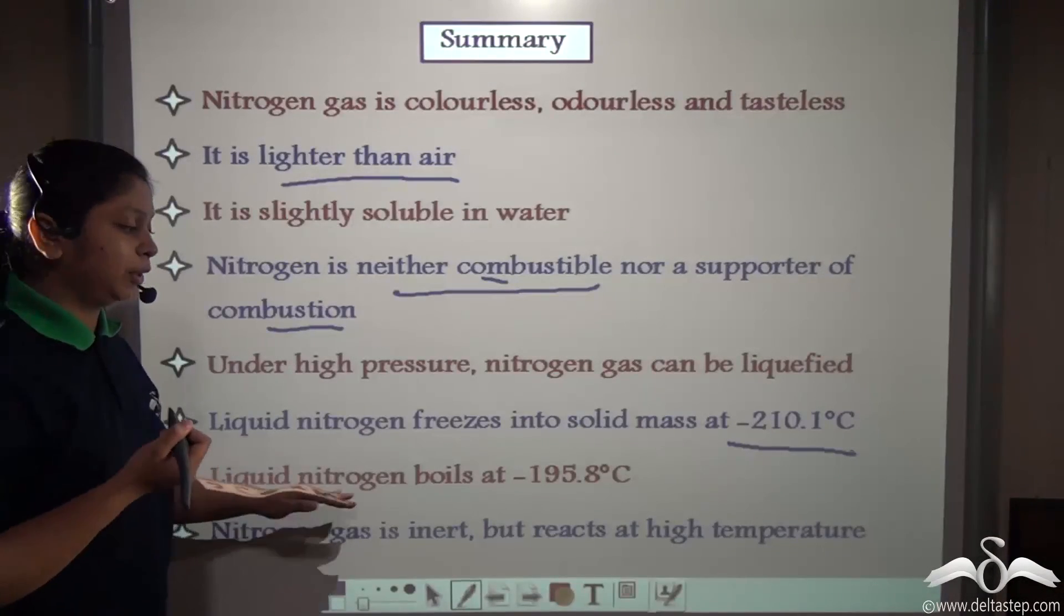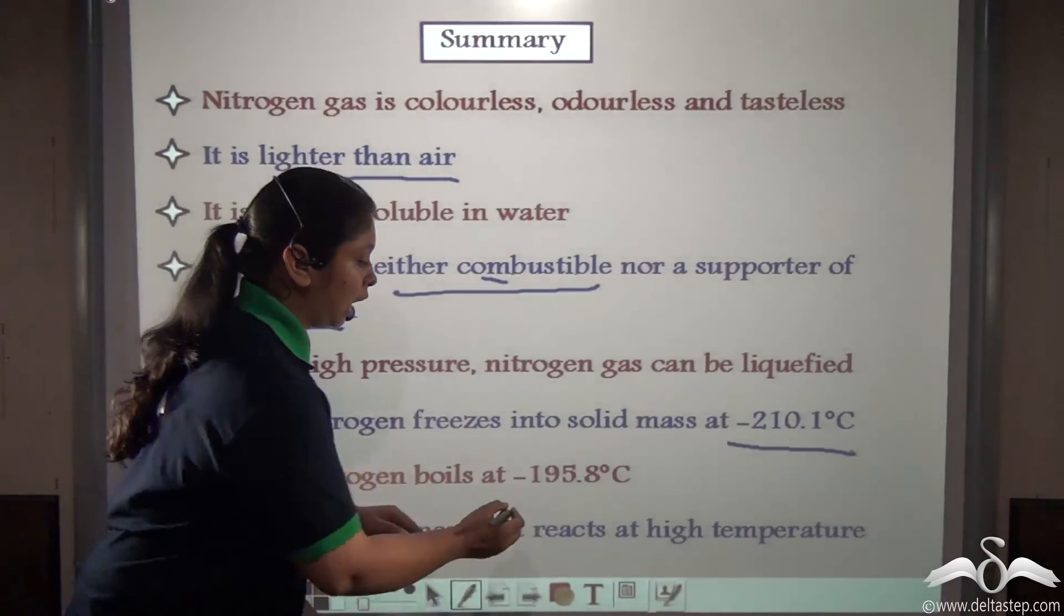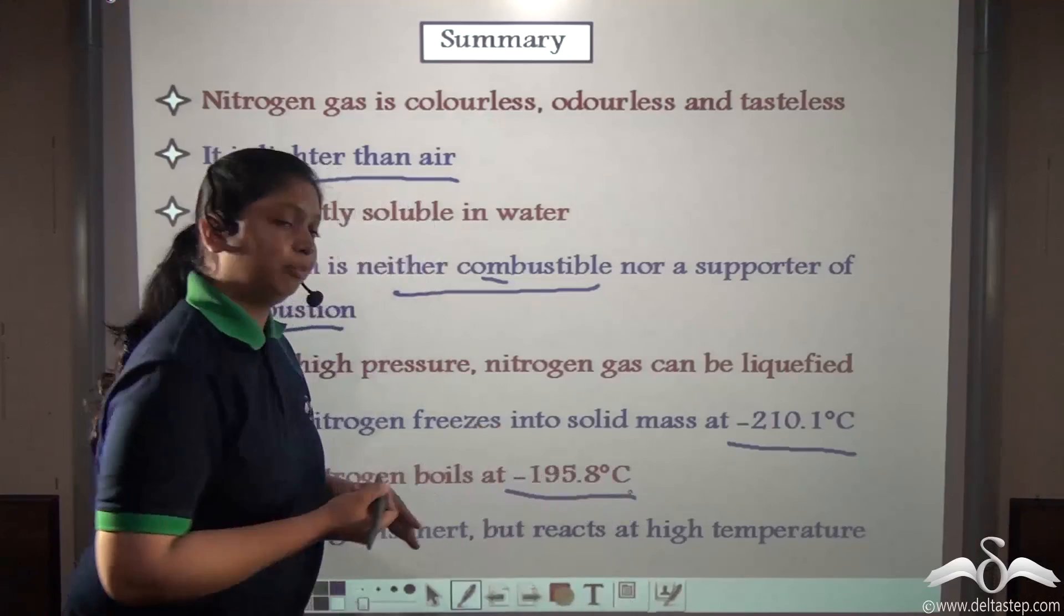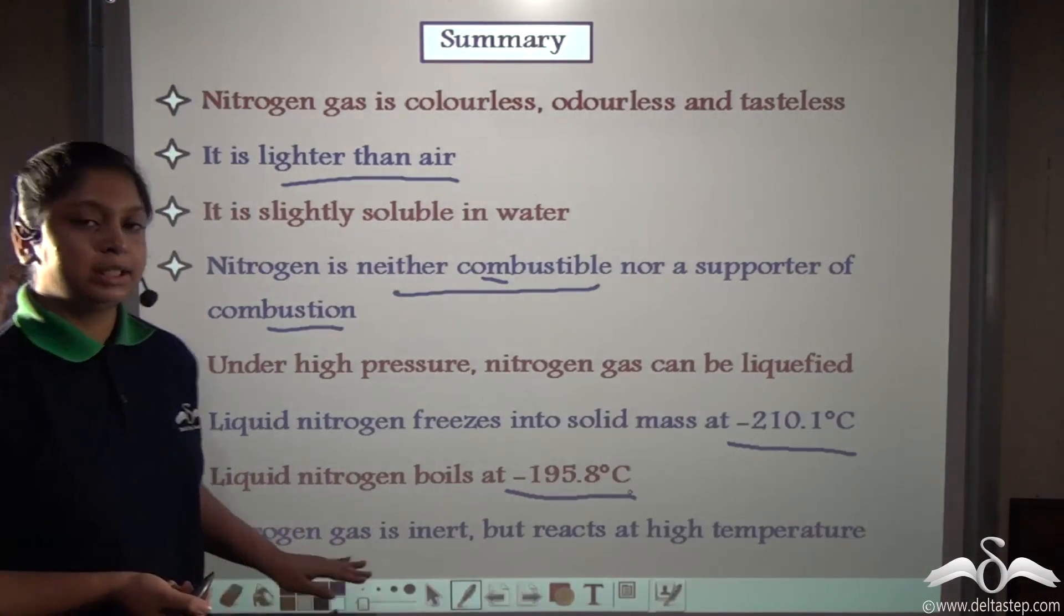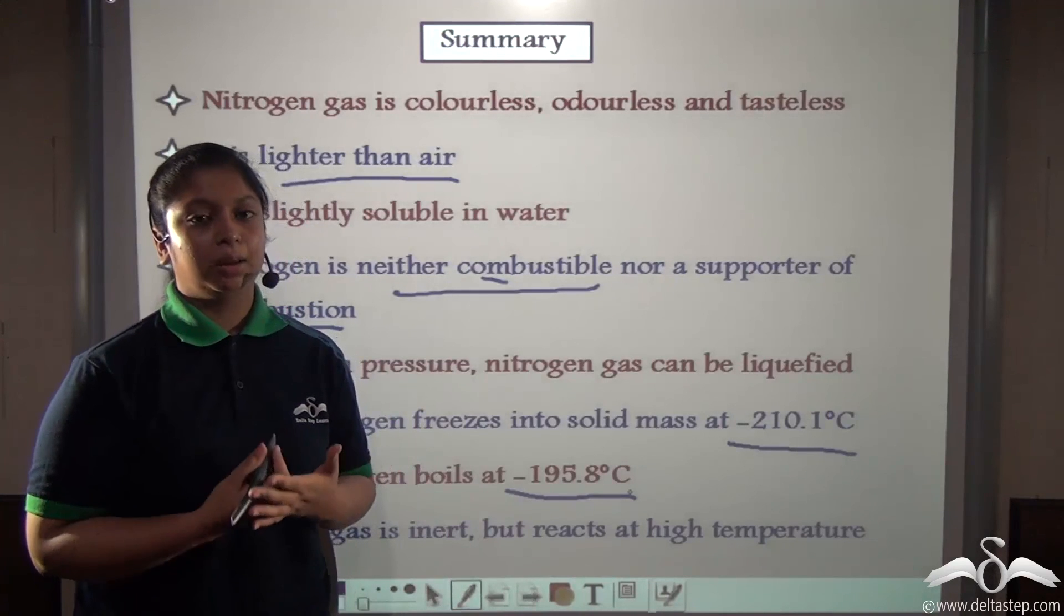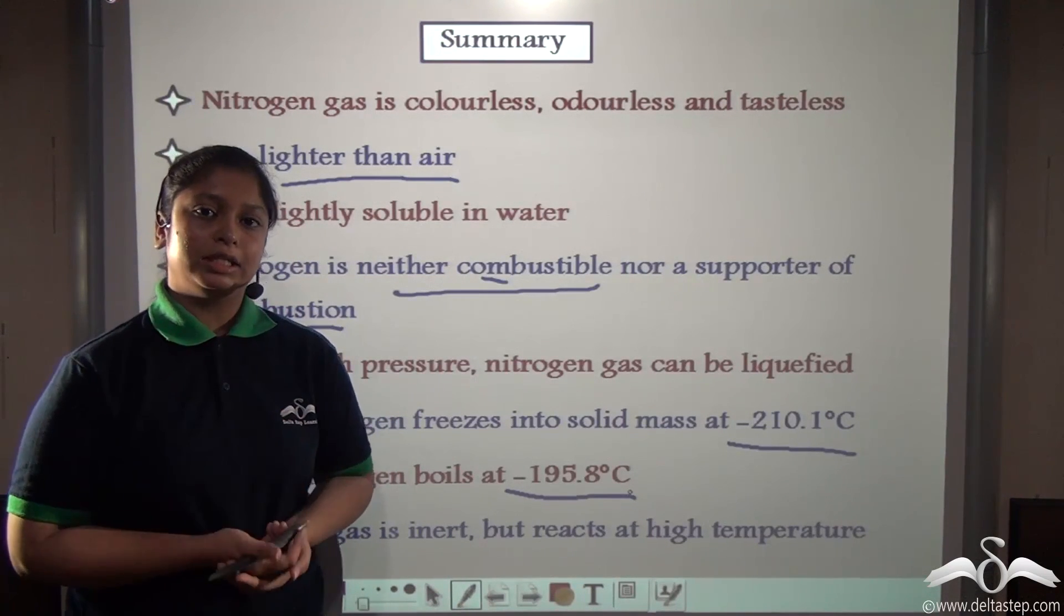Now this liquid nitrogen can also be boiled by heating it at minus 195.8 degrees Celsius. Nitrogen gas is inert, we know that, but nitrogen gas can be made reactive at a higher temperature.